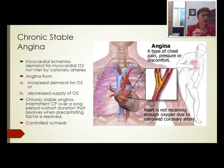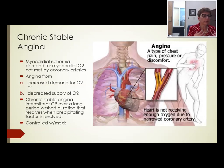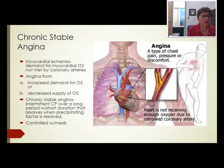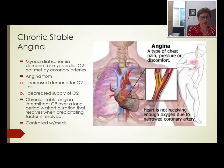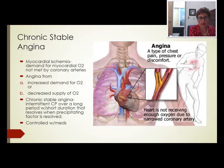Angina can occur when the body needs more oxygen, say you're running and your heart needs more oxygen but isn't getting it. Or you may not be getting enough oxygen due to anemia — a decreased number of red blood cells carrying oxygen molecules. If you don't have enough, you can also get angina. Chronic stable angina is intermittent chest pain over a long period, but it goes away when the precipitating factor is resolved — for example, chest pain with exercise that stops when you rest.